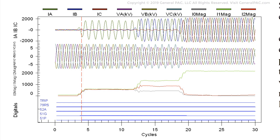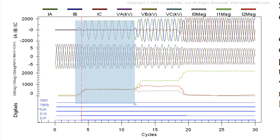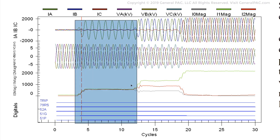Looking at that in terms of sequence components, we see a rise of sequence component quantities — both positive, negative, and zero sequence components — and they rise equally together. That equal rise is another characteristic of a line to ground fault. So it's very easily discerned that in this particular part, there is a line to ground fault present.